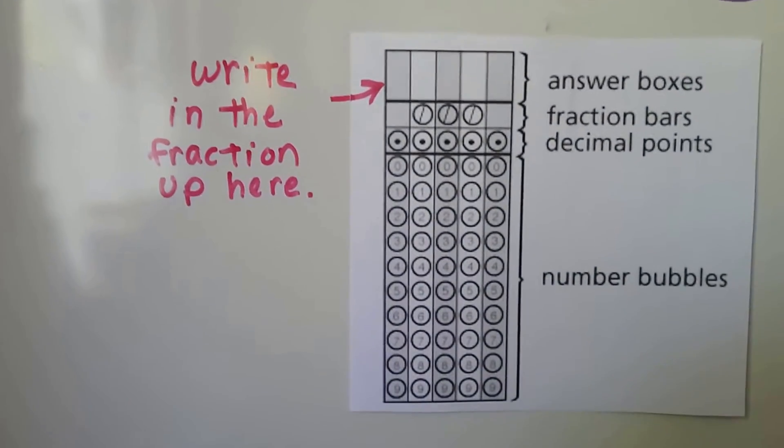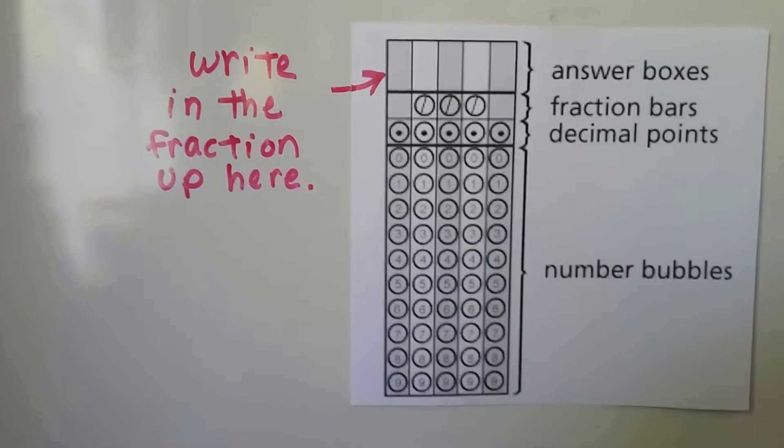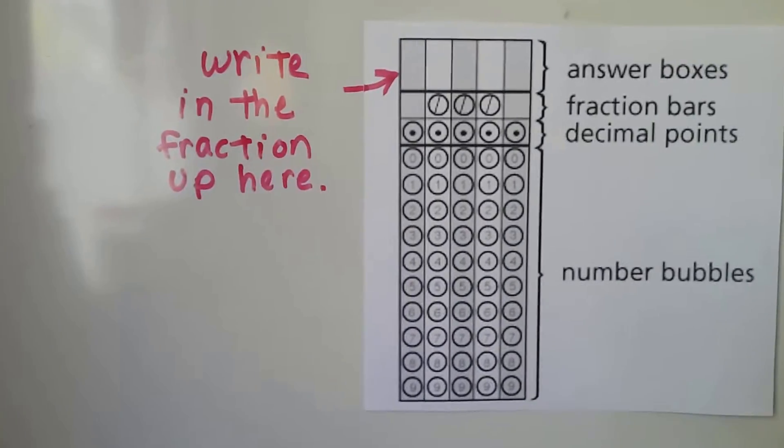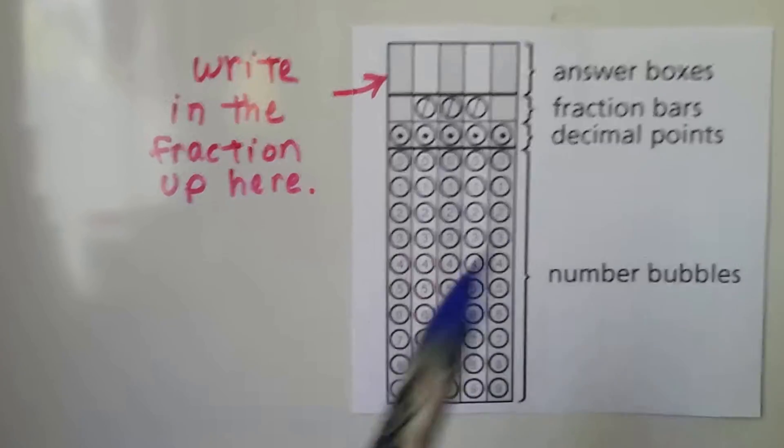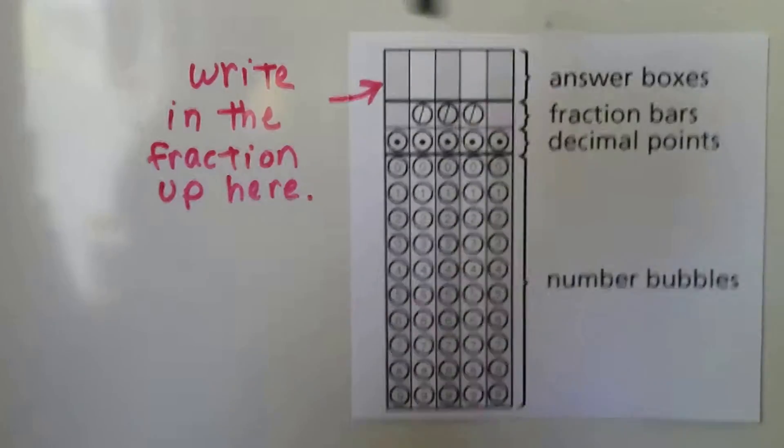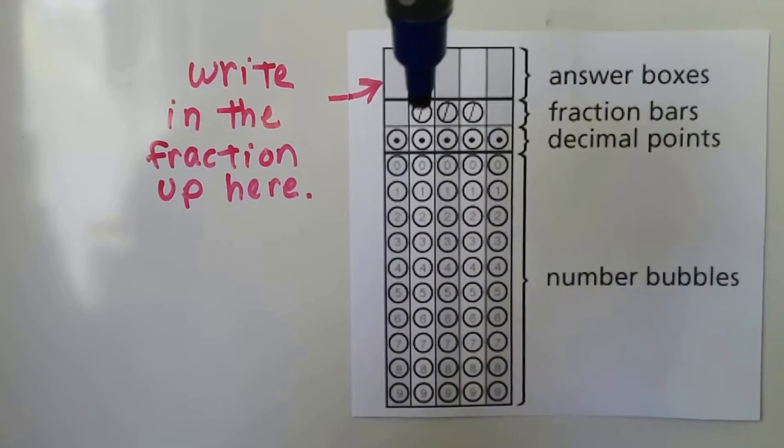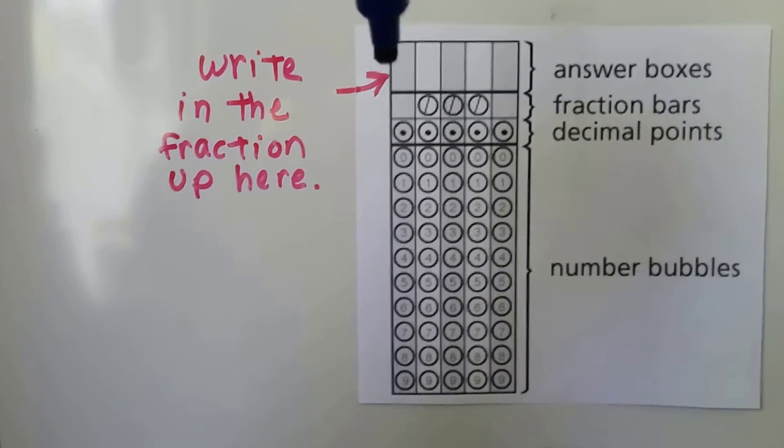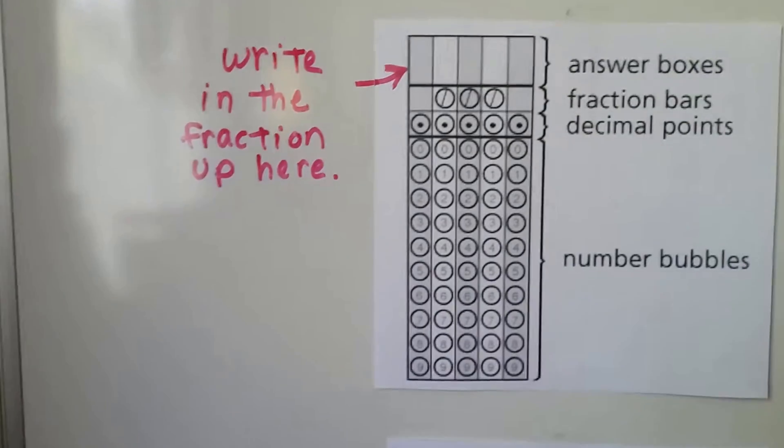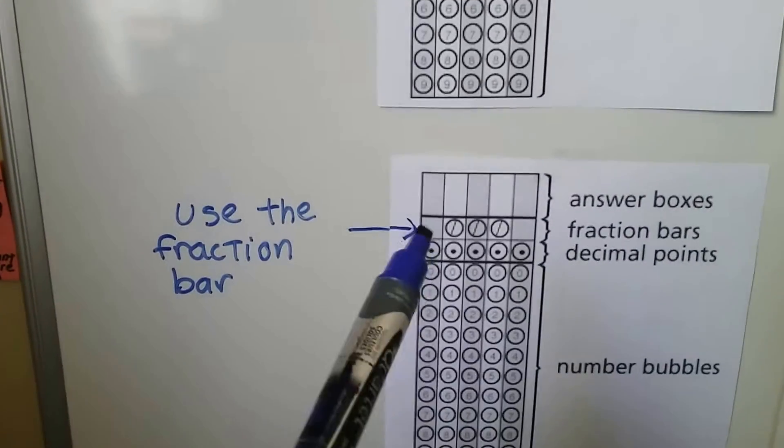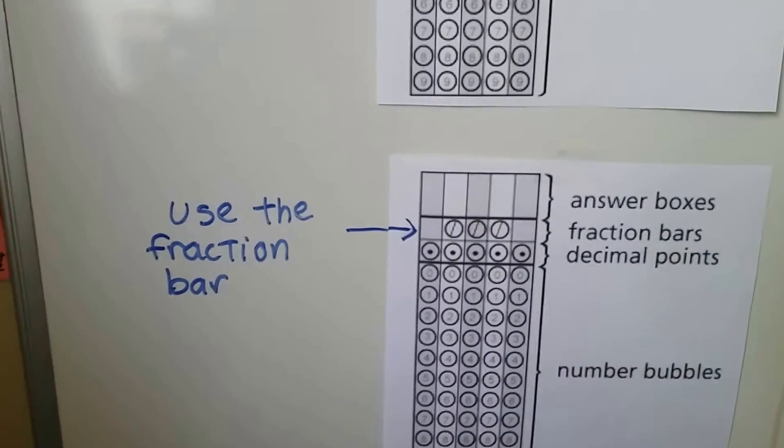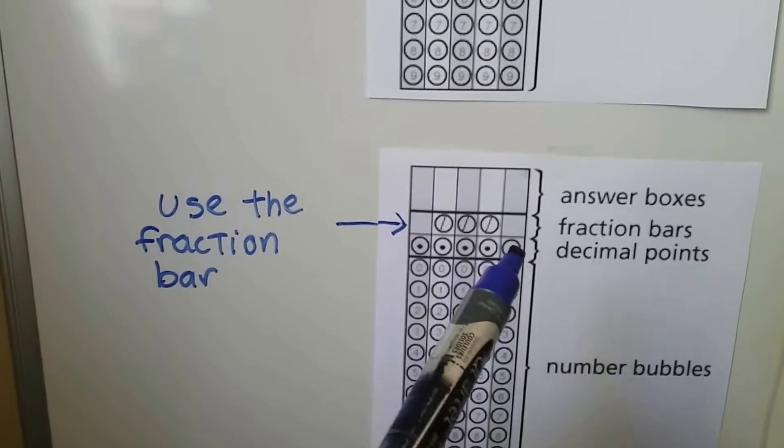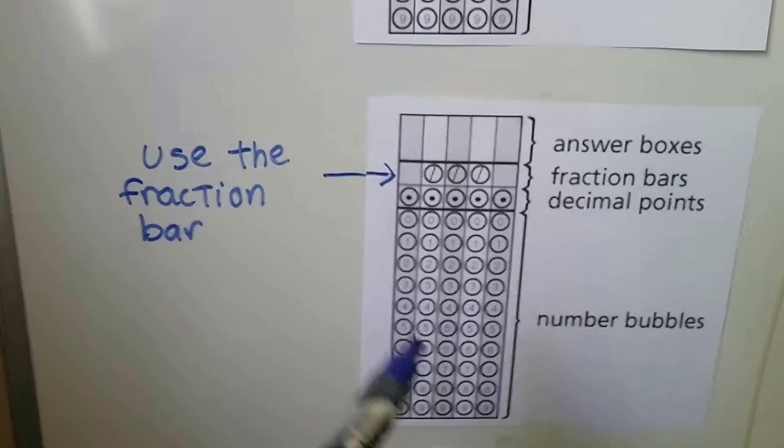On the GED math test, you're going to have some problems where you have to write one answer into a grid like this. You can write the fraction up here using one of these as a slash mark for the fraction bar. You fill in the circle for the slash bar. When we get to decimals in lesson 8, we're going to use these dots, and we fill in the number bubbles.